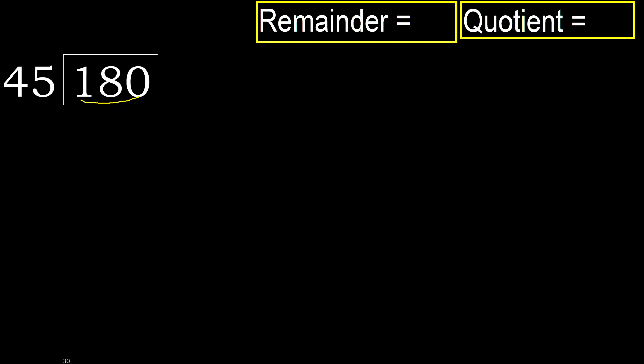180 is not less, therefore we work with 180. 45 multiplied by which number is nearest to 180, but not greater?